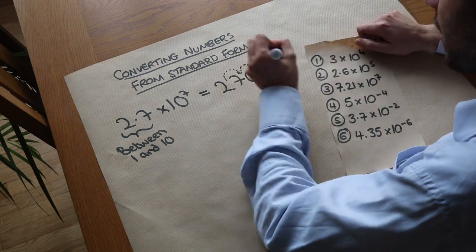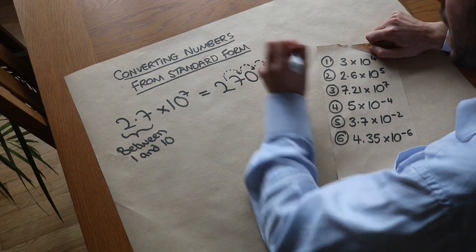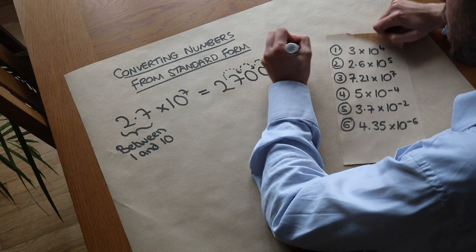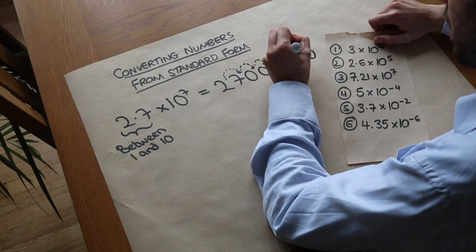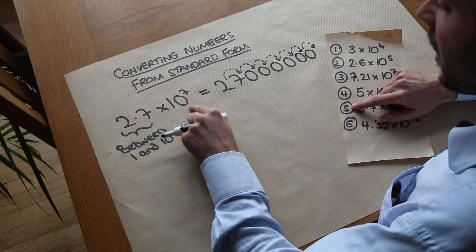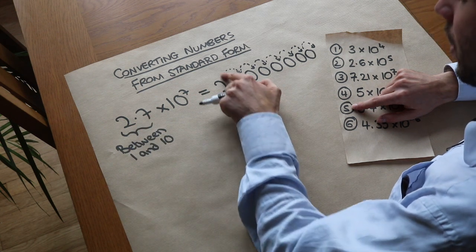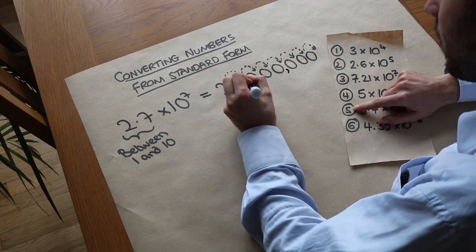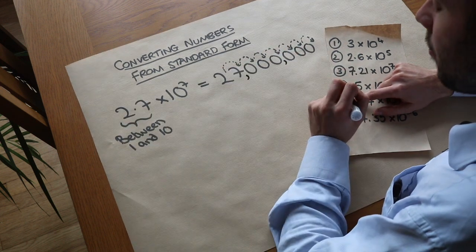How many times have we moved? One, two, three, four, five, so we need another two zeros because then we have six and then seven. So when we multiply 2.7 by 10 seven times, it moves one, two, three, four, five, six, seven times and we get 27 million.